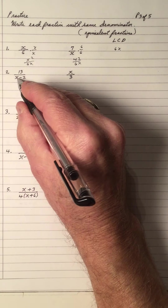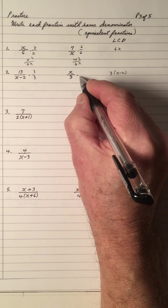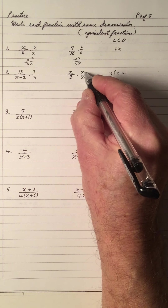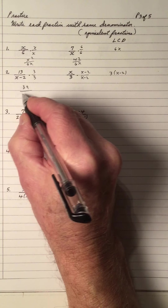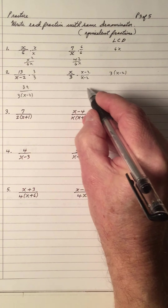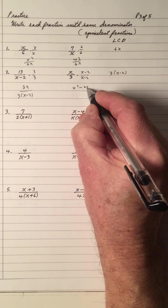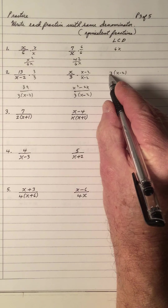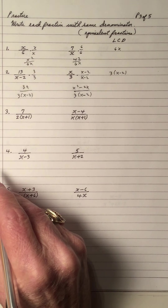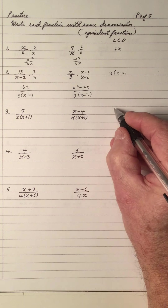The LCD for 3 and x minus 2 is 3 times x minus 2. So you need to multiply x minus 2 by 3, and multiply 3 by x minus 2. So for 3 here, I put it there — that gives me 39 over 3 times x minus 2. And x times x is x squared; x times negative 2 is negative 2x — all over 3 times x minus 2.